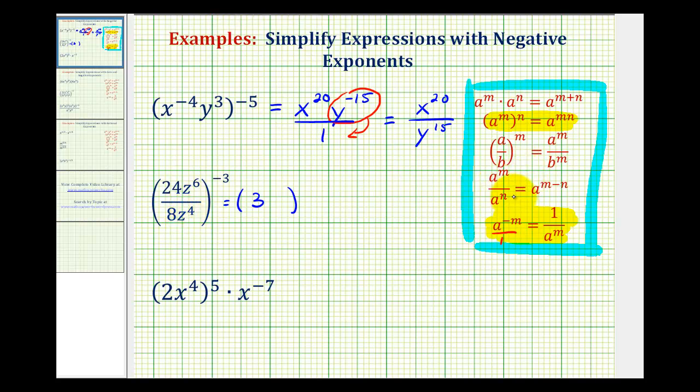Since the bases are the same and we're dividing, we will subtract the exponents. And since 6 minus 4 is equal to 2, we have z to the 2nd, and this is still raised to the power of negative 3.